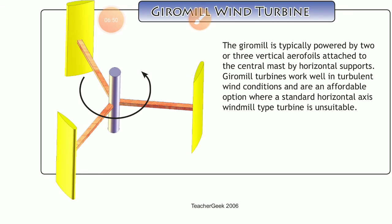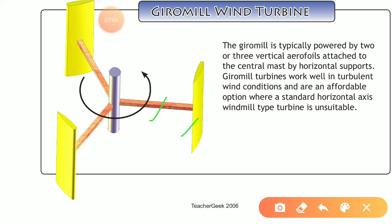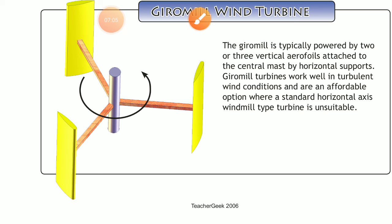Next is the Giromil wind turbine. The Giromil is typically powered by two or three vertical aerofoils attached to a central mast by horizontal supports. This turbine works well in turbulent or high-speed wind conditions and is an affordable option where a standard horizontal axis wind turbine is unsuitable. It is a high-speed wind turbine which can sustain high speed and provide movement.